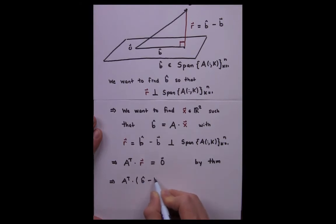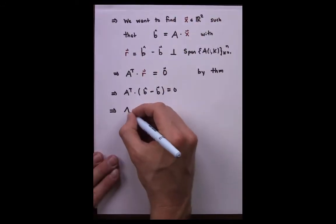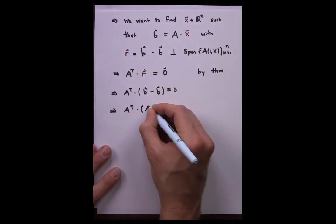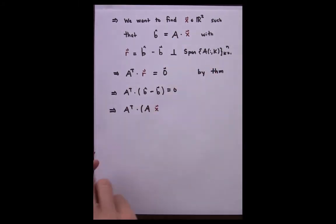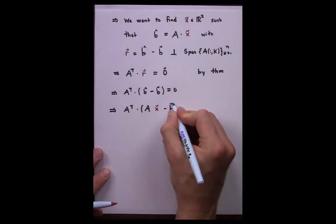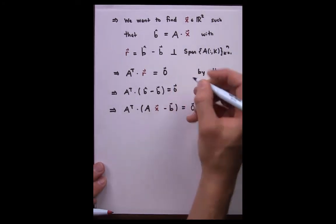By definition of R, we know that we can rewrite this as B hat minus B. Continuing in this equation, we recall that B hat was A times X for some unknown X value, because it was designed to be in the span of the columns of A.